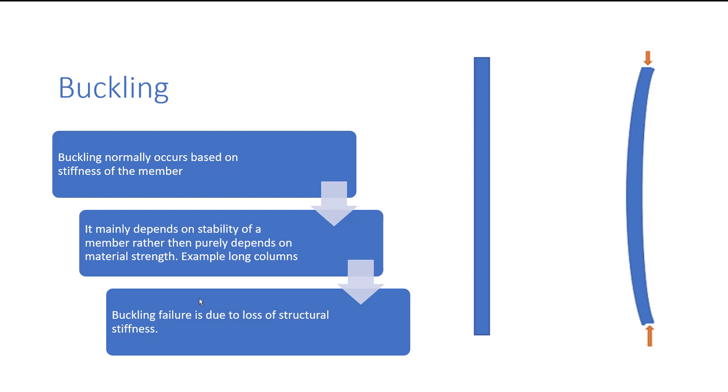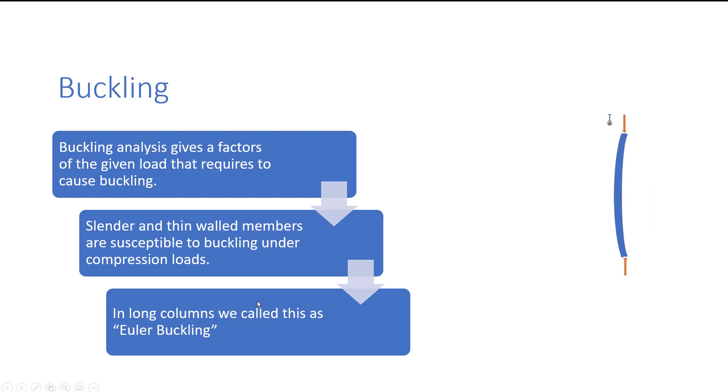Now, the buckling analysis normally gives the factors of the given load that is required to cause the buckling. When you do the analysis using any structural engineering software, it produces the factors. For example, if you have 10 kilonewtons for a member and your factor is one, that means the 10 kilonewtons is good enough to take care of the load.